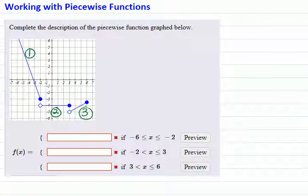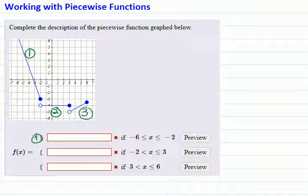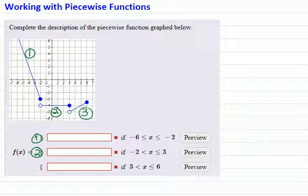Part 1 is for x less than or equal to negative 2, so it is the first equation. Part 2 is for x between negative 2 and 3, so it is the second part of the piecewise function's equation. Part 3 is for x between 3 and 6, and that will be the third equation.